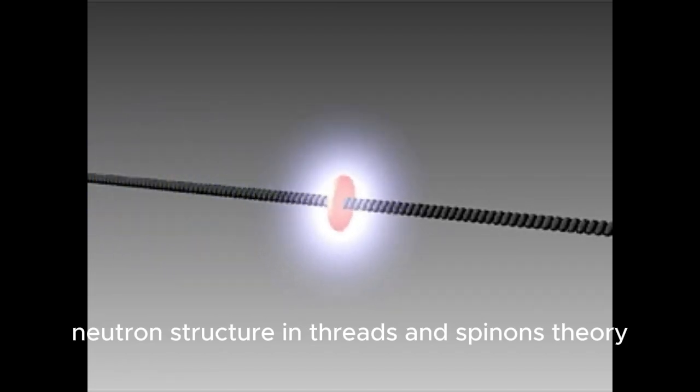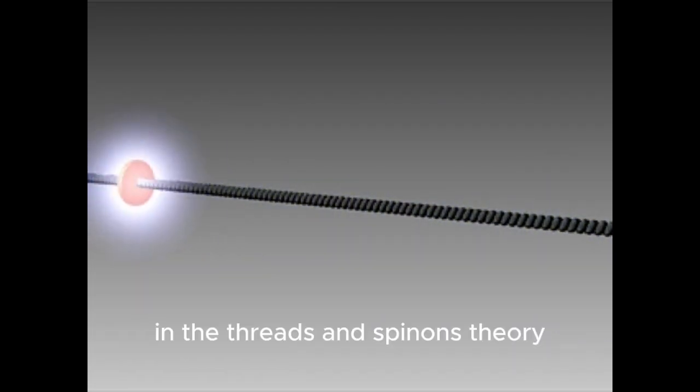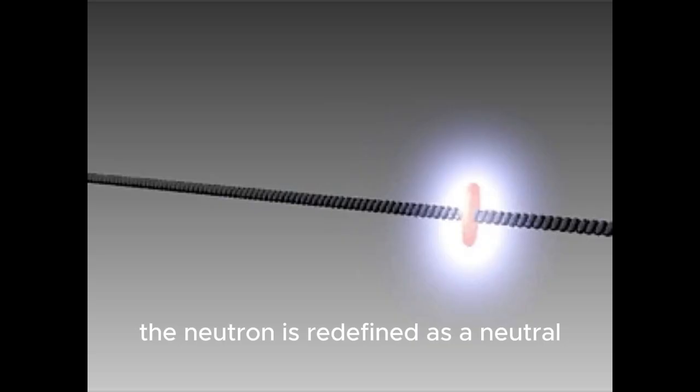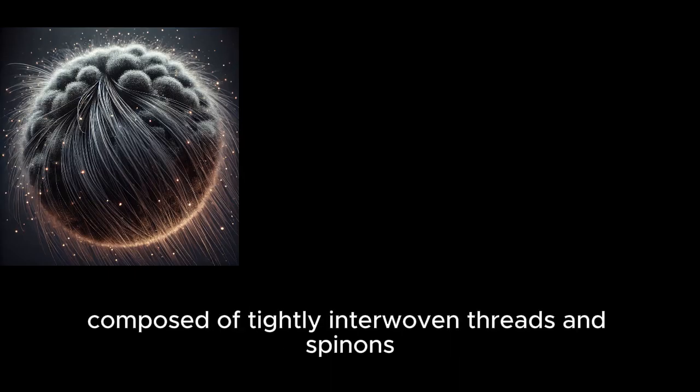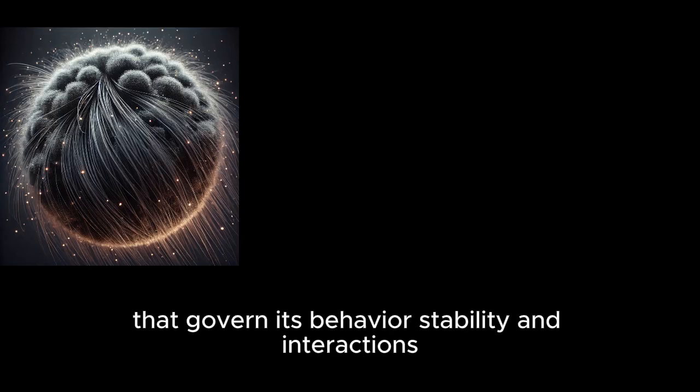Neutron structure in threads and spinons theory. In the threads and spinons theory, the neutron is redefined as a neutral yet dynamic structure composed of tightly interwoven threads and spinons that govern its behavior, stability, and interactions.